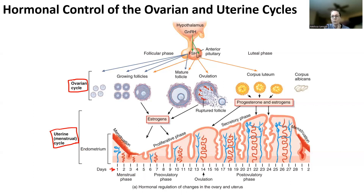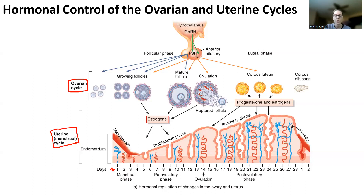You're going to see the ovarian cycle, which is what's happening to our follicle and our oocyte. Then we have the uterine or the menstrual cycle — basically, what's happening to the uterus. So, day one: what's happening in a woman's ovary and what's happening in her uterus. Let's track what's going to happen and go through what's happening at each stage.